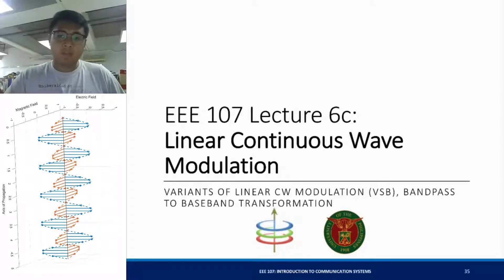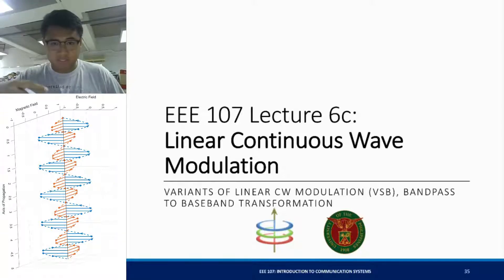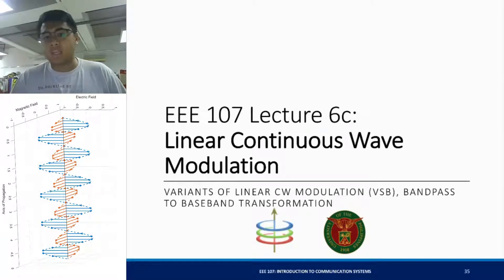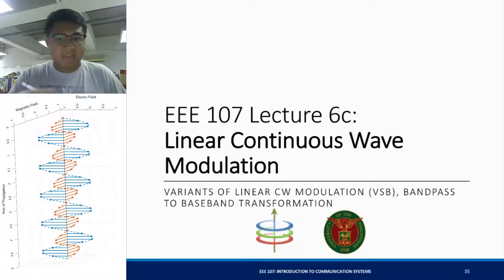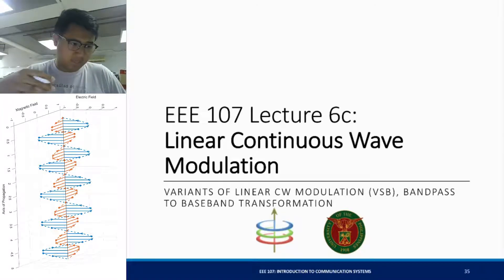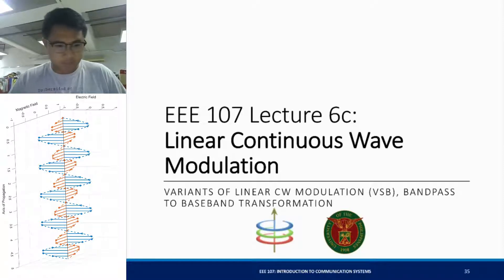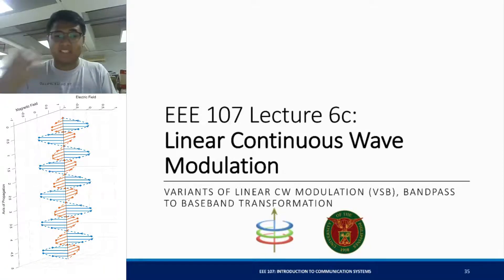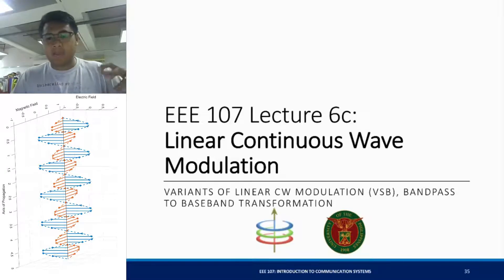We'll also talk about how to analyze signals generally. If you have a high frequency signal translated to a high frequency bandpass signal, we can actually transform it to what we call a complex baseband equivalent. Using the complex baseband equivalent, we're able to analyze the signal and easily get the power, instead of trying to solve for the power using cosine and sine carriers. Using a bandpass to baseband transformation will make things easier for us.